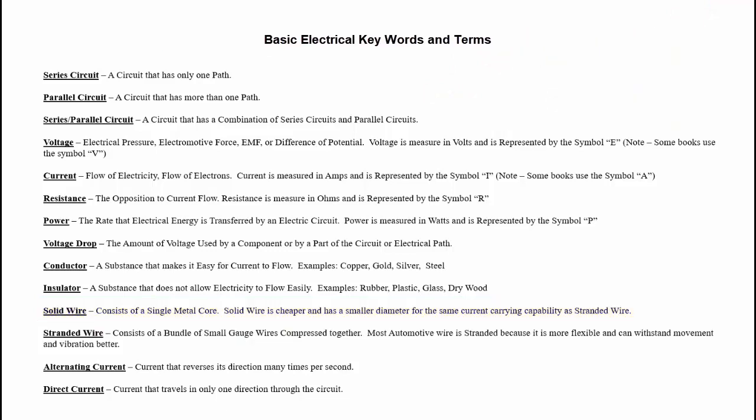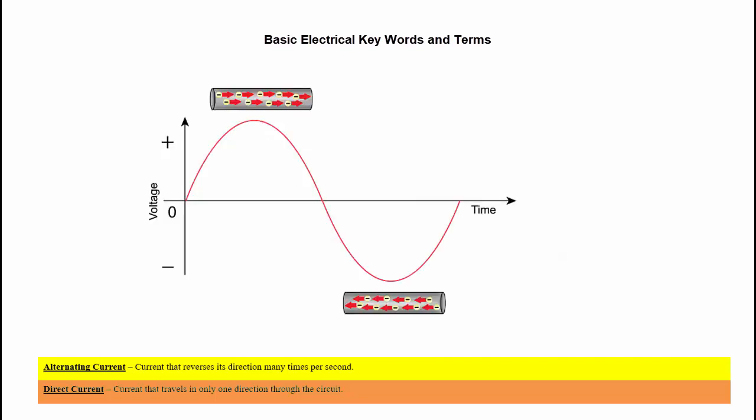Our last two terms are alternating current and direct current. Alternating current is what's used in your home where current is reversing its direction. It means the electrons are flowing one way and then they're flowing the other way and then back to the first way and then back to the second way. The current is just vibrating back and forth. If you looked on an electrical device in North America, it would say 60 hertz, which means 60 times per second.